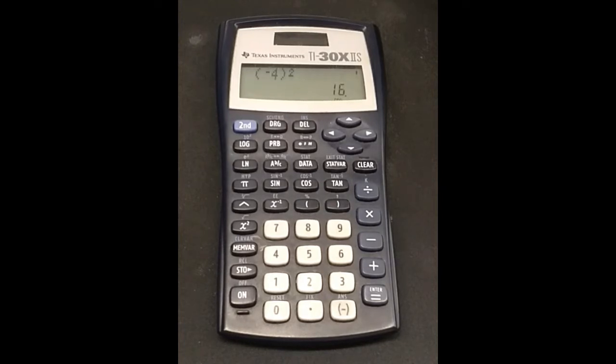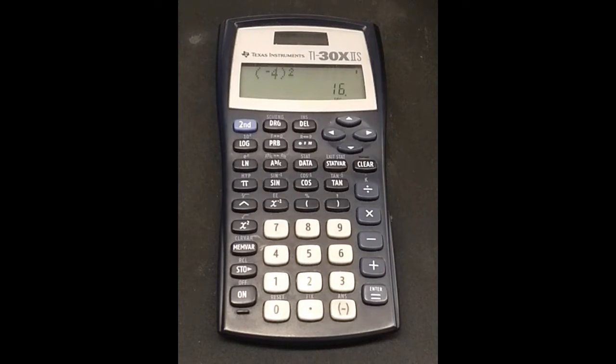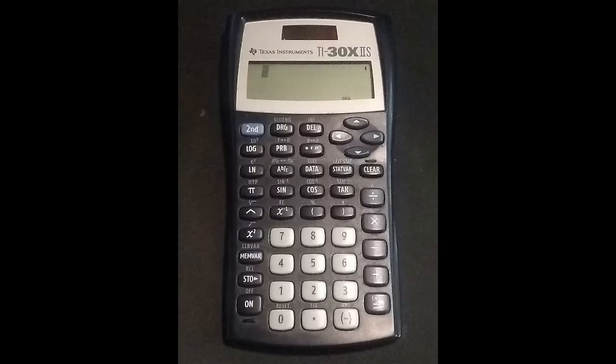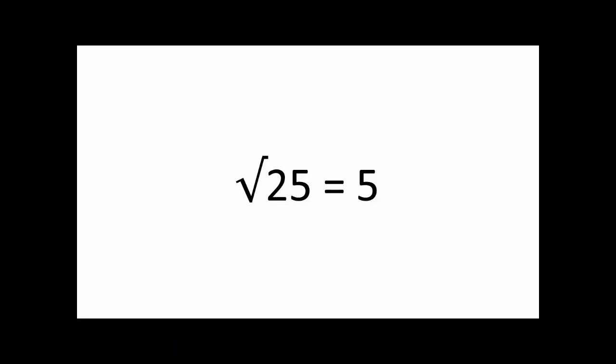Sometimes we are asked to take the square root of a number. When we take a square root, we are finding which positive number, when multiplied by itself, gets us the number indicated. For example, the square root of 25 is 5, because 5 times 5 is 25. The symbol for a square root looks like this.